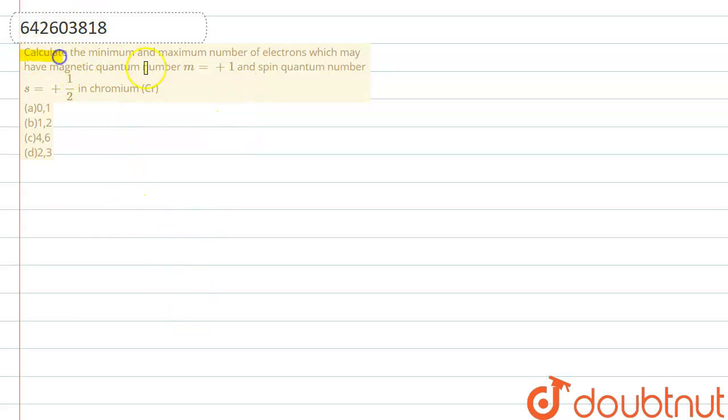Let me explain it to you. Calculate the minimum and maximum number of electrons which may have magnetic quantum number m equals plus one and spin quantum number s equals plus one half in chromium. So first of all, we've got to see the electronic configuration of chromium.